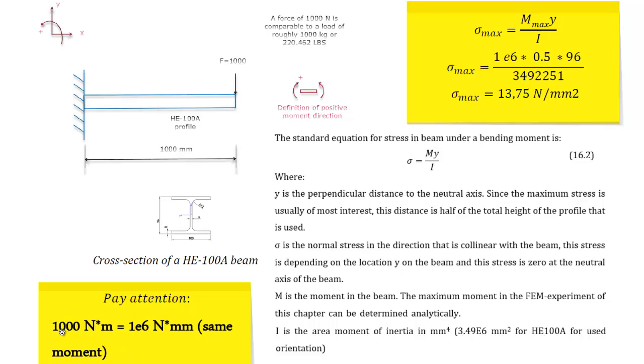So I can see that this value is exactly the same as this value. And here you see, pay attention, a thousand Newton over a meter is the same as one million Newton over a millimeter. It's the same moment. It's actually the same as that one meter is a thousand millimeters. It's the same thing. But it's a bit harder to understand.